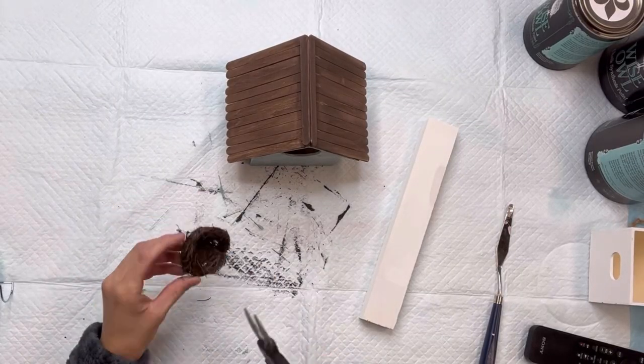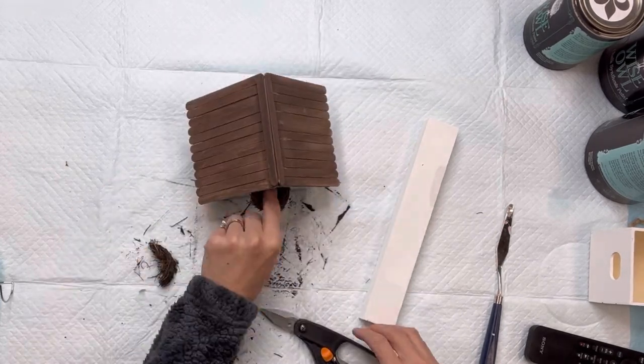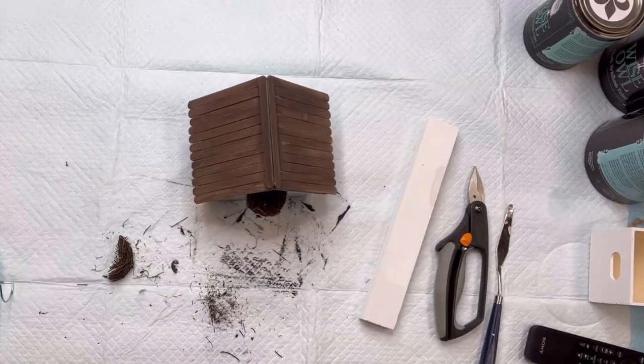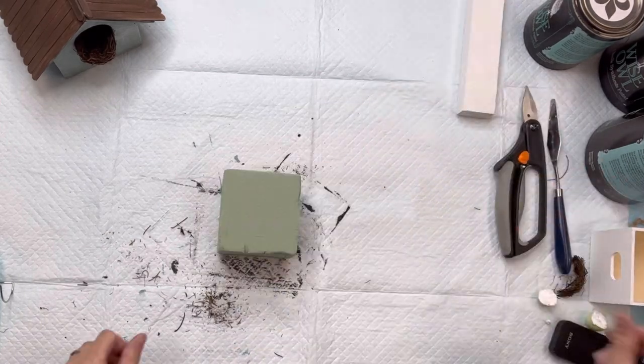I have this small little bird's nest. It came in a pack of four from Hobby Lobby and I'm going to cut it in half so that the backside is flat and I can just fit it right inside the hole of the birdhouse.